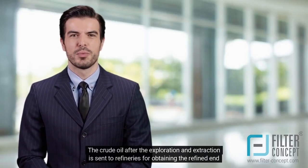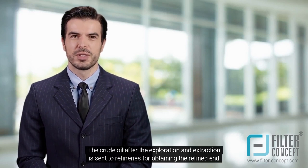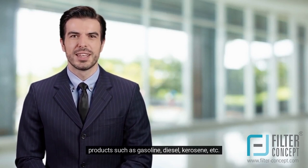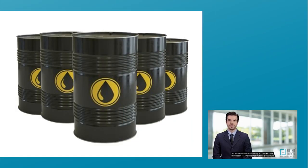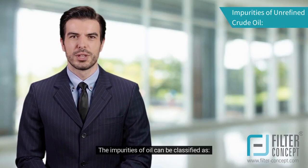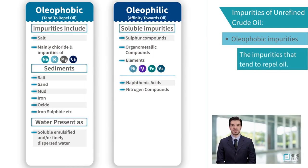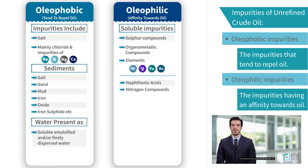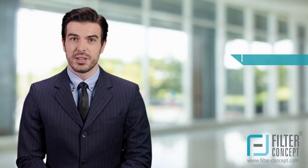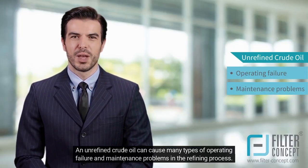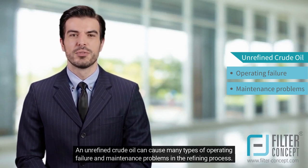The crude oil after exploration and extraction is sent to refineries for obtaining refined end products such as gasoline, diesel, kerosene, etc. As we know, crude oil is basically a complex mixture of hydrocarbons. The unrefined crude oil is a coagulated thick black liquid which also contains various impurities, classified as oleophobic impurities — those that tend to repel oil — and oleophilic impurities — those having an affinity towards oil.